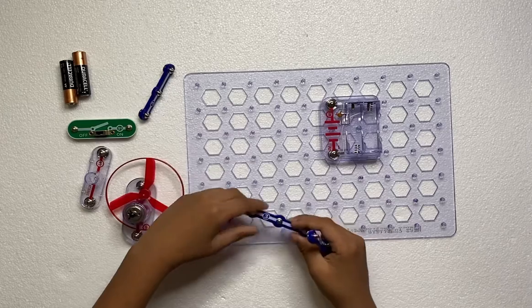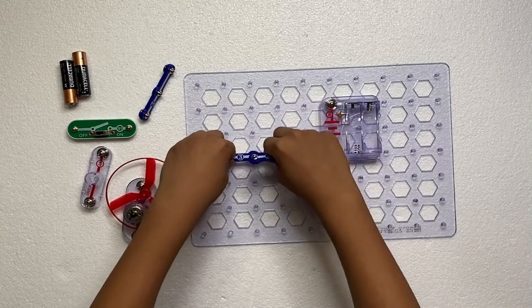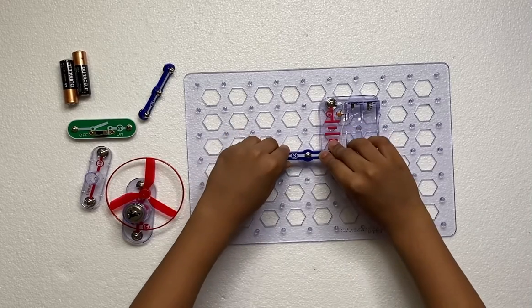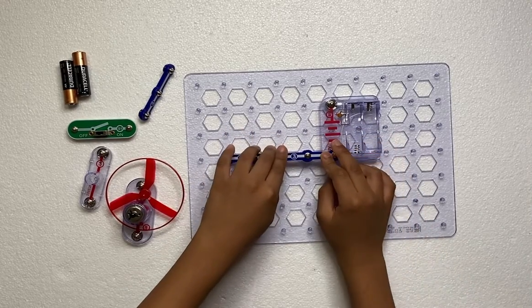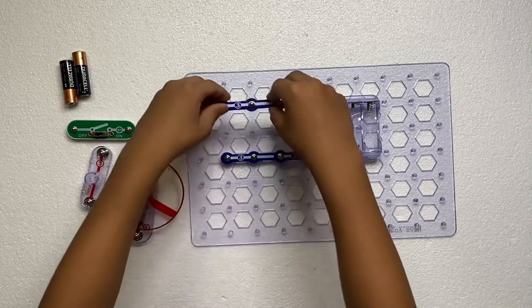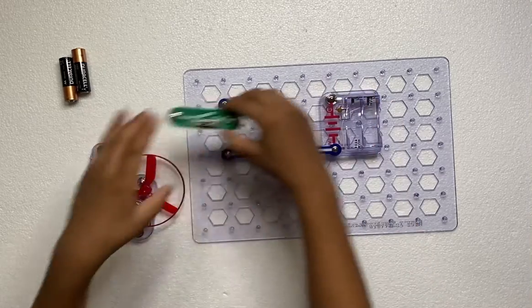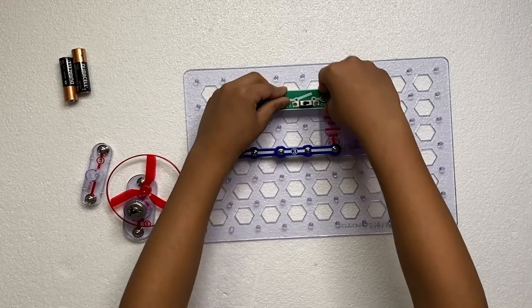Connect one like this, the other like that. And then you have to connect this piece like this. The on and off switch is gonna connect right there.